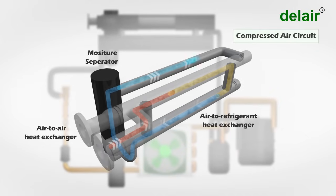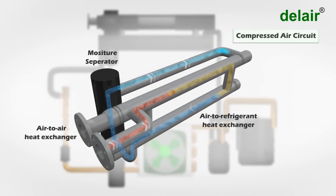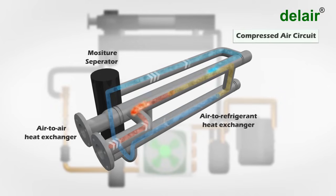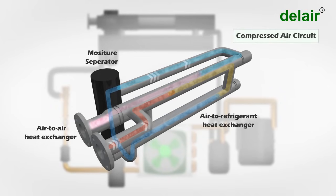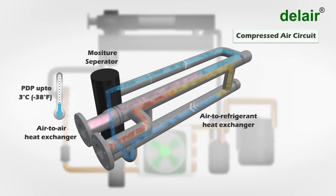The cool dry air then enters into the air-to-air heat exchanger and is warmed up by the incoming hot air to near room temperature. The outgoing air has achieved 3 degrees Celsius pressure dew point and is now dry.